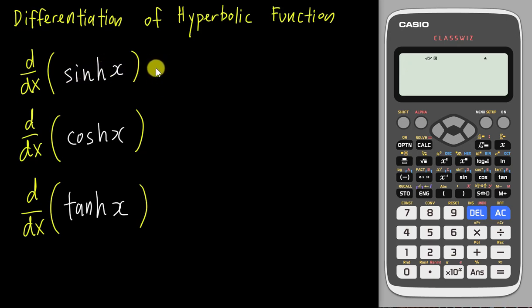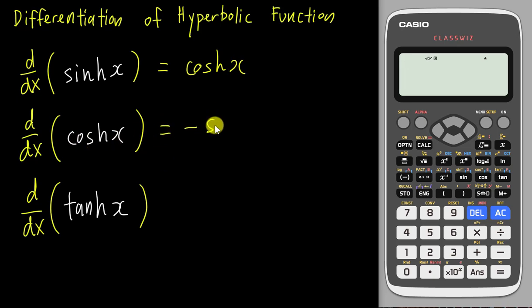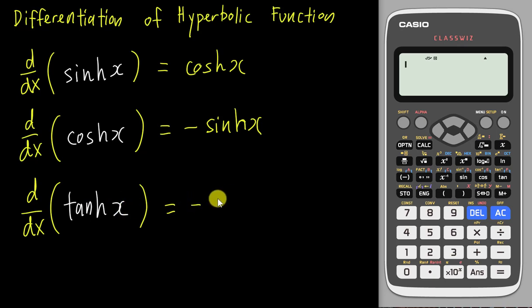When you differentiate hyperbolic sine x you get hyperbolic cosine x. When you differentiate hyperbolic cosine x you get hyperbolic sine x. And when you differentiate hyperbolic tangent x you get hyperbolic secant squared x.